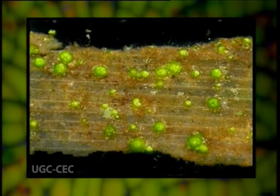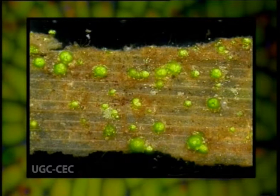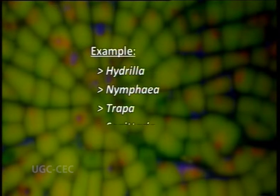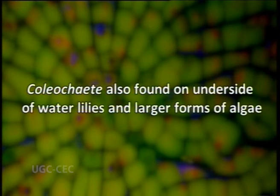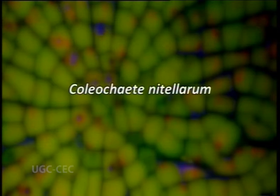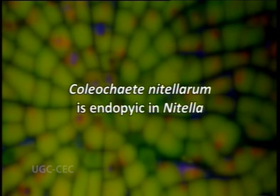Now let's come to distribution and habitats. Coleochaete is widespread in fresh waters of tropical, temperate, and arctic regions. The genus is periphytic and often found attached to submerged portions of aquatic plants such as Hydrilla, Nymphea, Trapa, Sagittaria, and Potamogeton, or on the underside of water lilies. Some species also grow endophytically inside cell walls; for example, Coleochaete nitellarum is endophytic in Nitella.